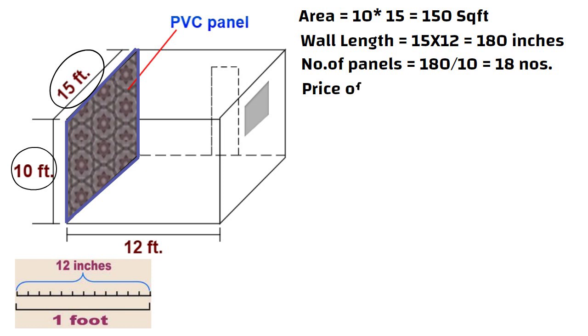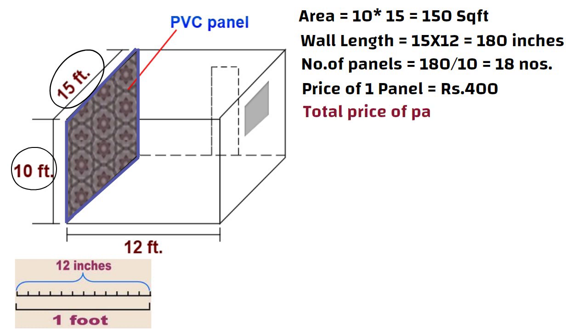The price of 1 panel in the market is 400 rupees. So the total amount for all the panels is 18 x 400, which is equal to 7200 rupees.